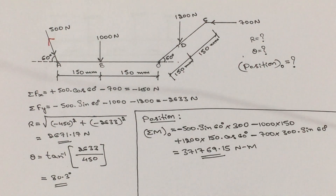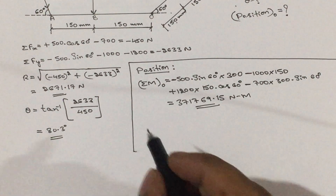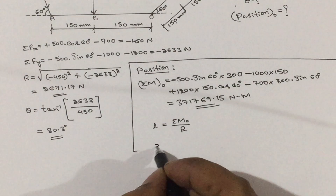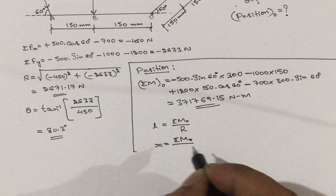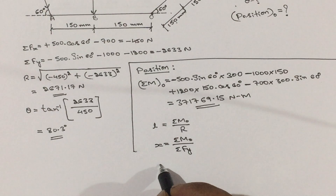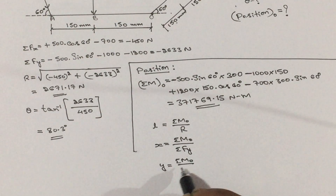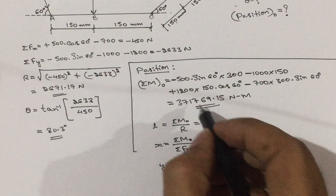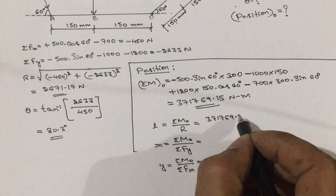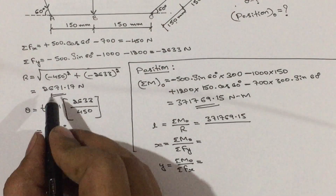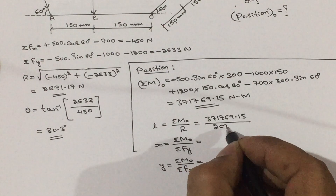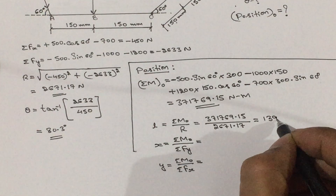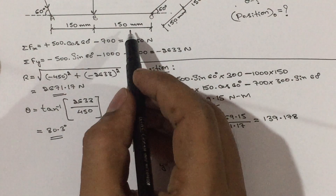Once the sum of moments is calculated, we can find the distances. The perpendicular distance L = sigma M / R = 371769.15 / 2671.17. And the X intercept = sigma M / sigma Fy = 371769.15 / 2633 (taking the positive value), giving X = 141.2 millimeter. All distances are in millimeters.